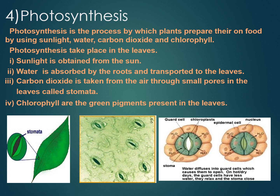Carbon dioxide and water are the raw materials needed for photosynthesis. Carbon dioxide is absorbed from the air and water is absorbed from the soil. Sunlight provides the energy needed for the chemical reaction, and it is captured by the green pigment called chlorophyll. Simple sugar like glucose is formed, and glucose is stored as starch in the leaves. Oxygen is released as a by-product.